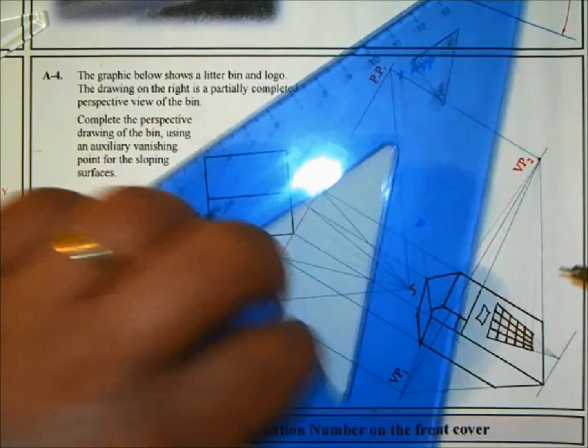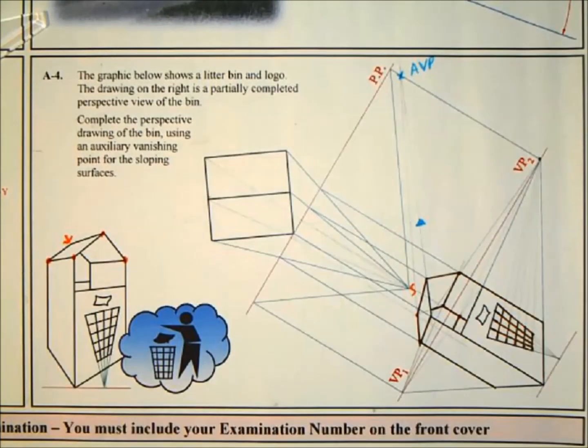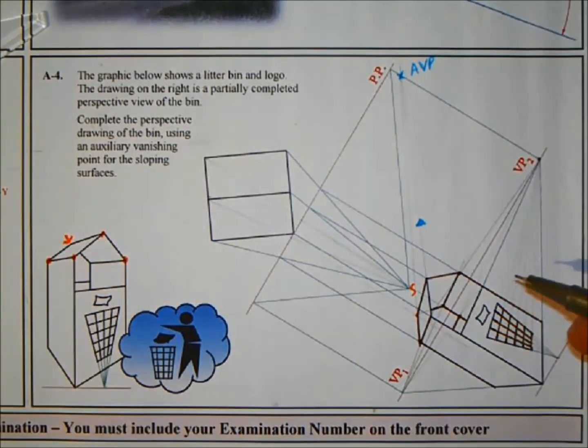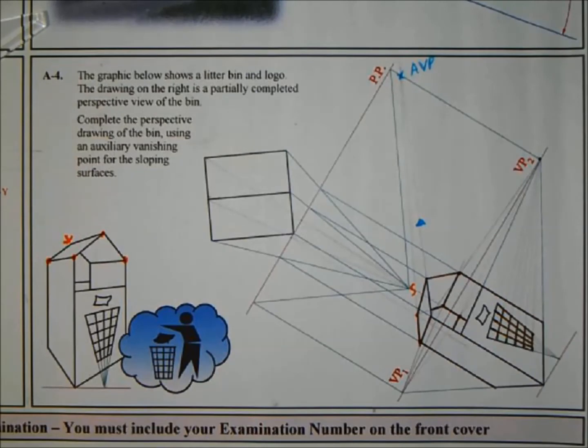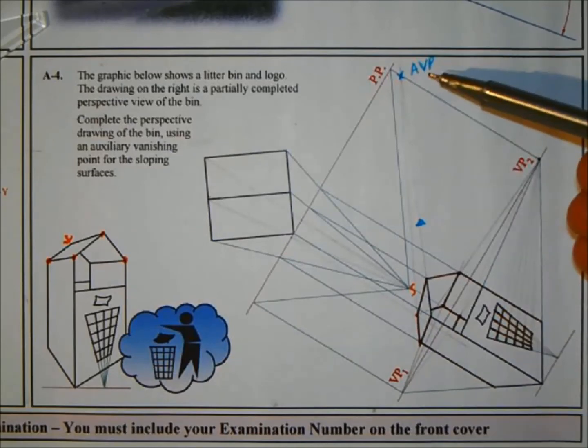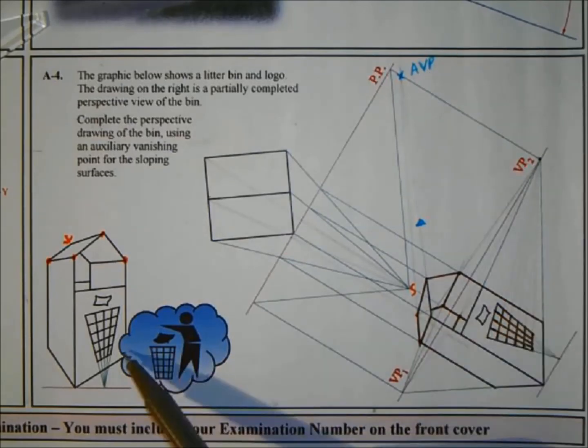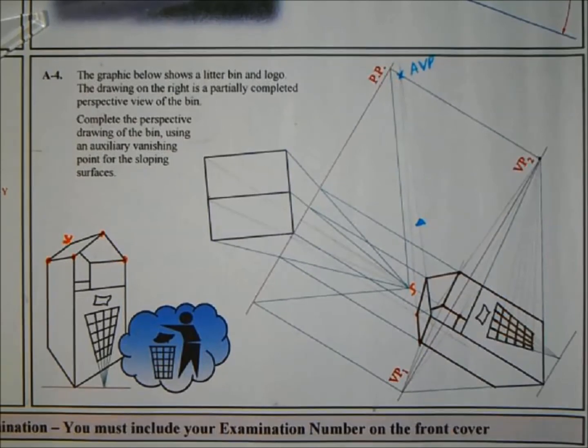Now let's double check that the question is finished and that everything is drawn in strong. Complete the perspective drawing of the bin using the vanishing point for the sloping surfaces. So that's it done. It's all done using the auxiliary vanishing point and if you look closely here they're basically giving you the answer. There shouldn't be any difficulty with those perspective questions, especially the short questions. They're really nice if they come up as a short question. That's the question done.